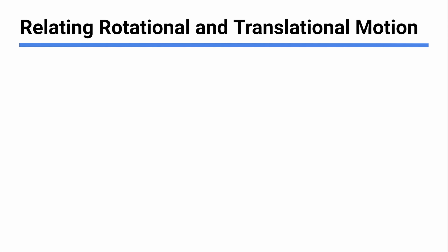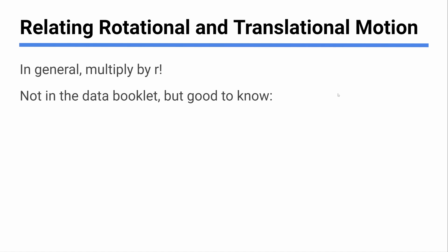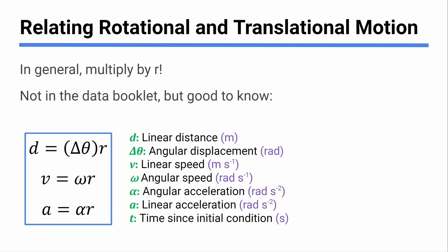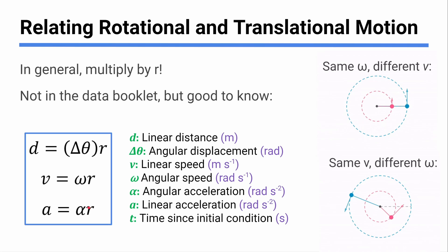There are ways to translate between angular and linear quantities. Essentially, you multiply the angular quantity by r — the radius — to get the linear equivalent. These aren't all in the data booklet, but the velocity one, v = ωr, is in Topic A with circular motion. If you want the linear distance something travels, multiply angular displacement by r; similarly for acceleration and so on.